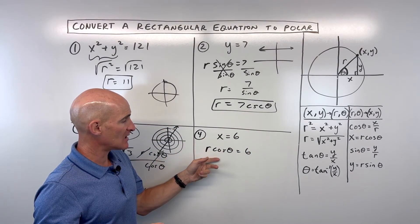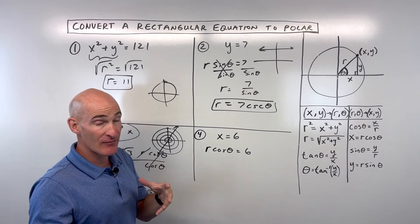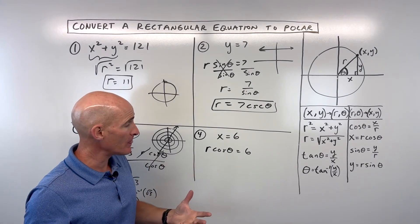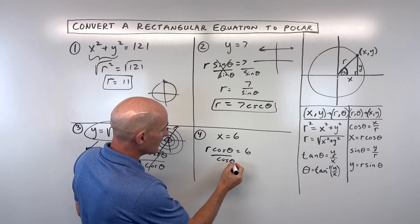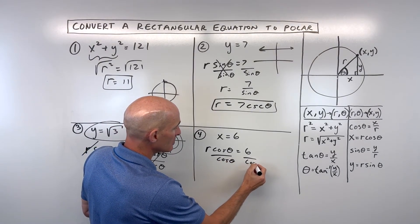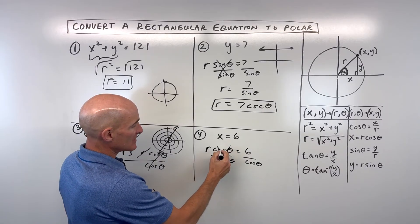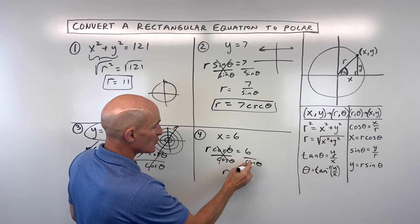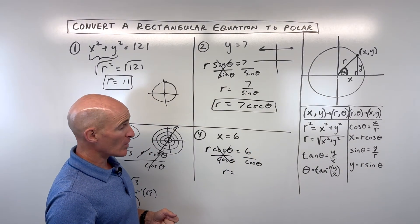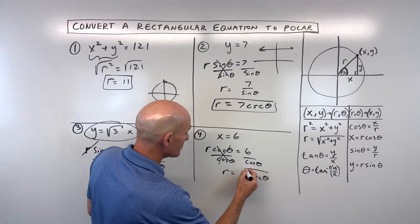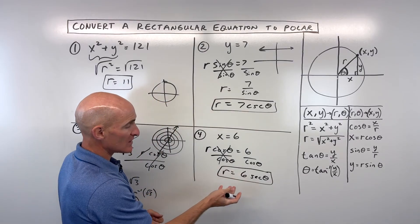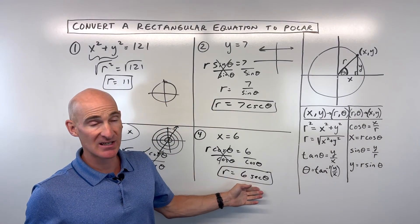Just try to eliminate x's and y's, and just end up with r's and thetas. After that, you can do a little bit of cleaning up, which is what we're going to do right now by dividing both sides by cosine theta. A little bit of rewriting. And so now these cancel. You can see that you're left with 6 over cosine theta. But what's 1 over cosine theta equal to? That's the secant of theta. So we can write this a little bit more condensed as r equals 6 secant of theta.